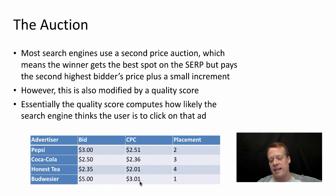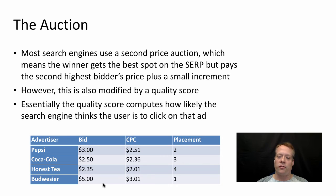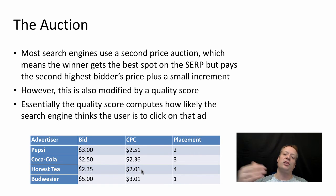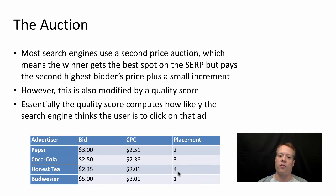Pepsi pays $2.51 — just above Coca-Cola's bid — and gets the second placement. Coca-Cola, in third place, pays slightly more than Honest Tea. And Honest Tea pays essentially some floor price and gets the fourth placement. There's some established floor price depending on the category.